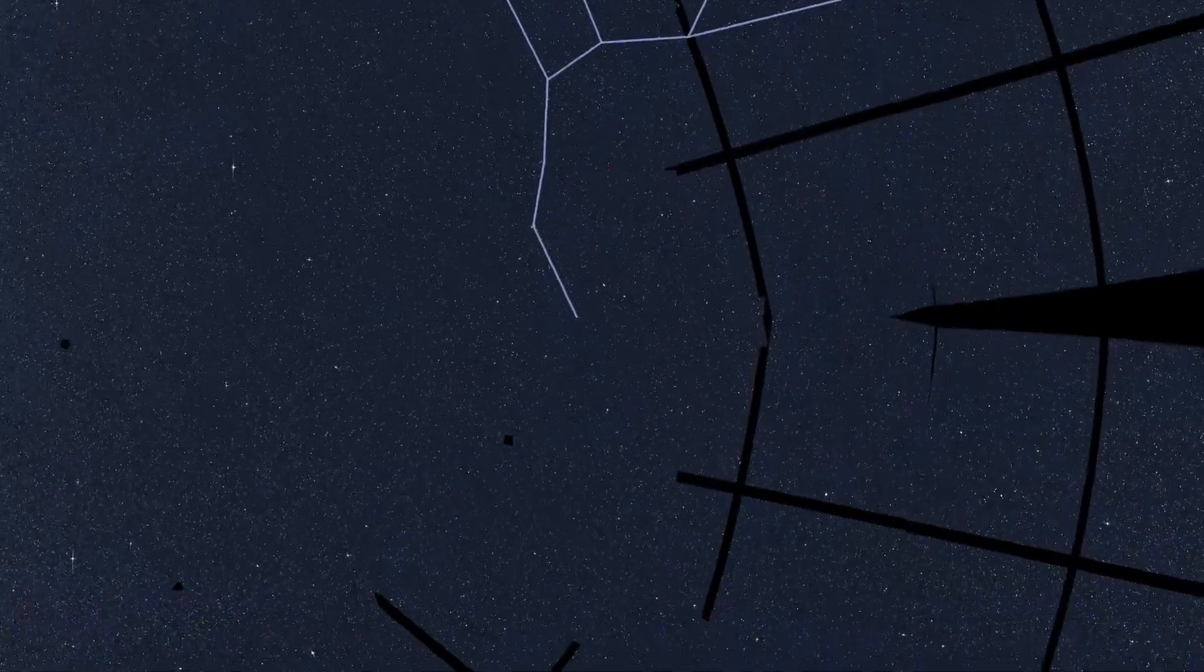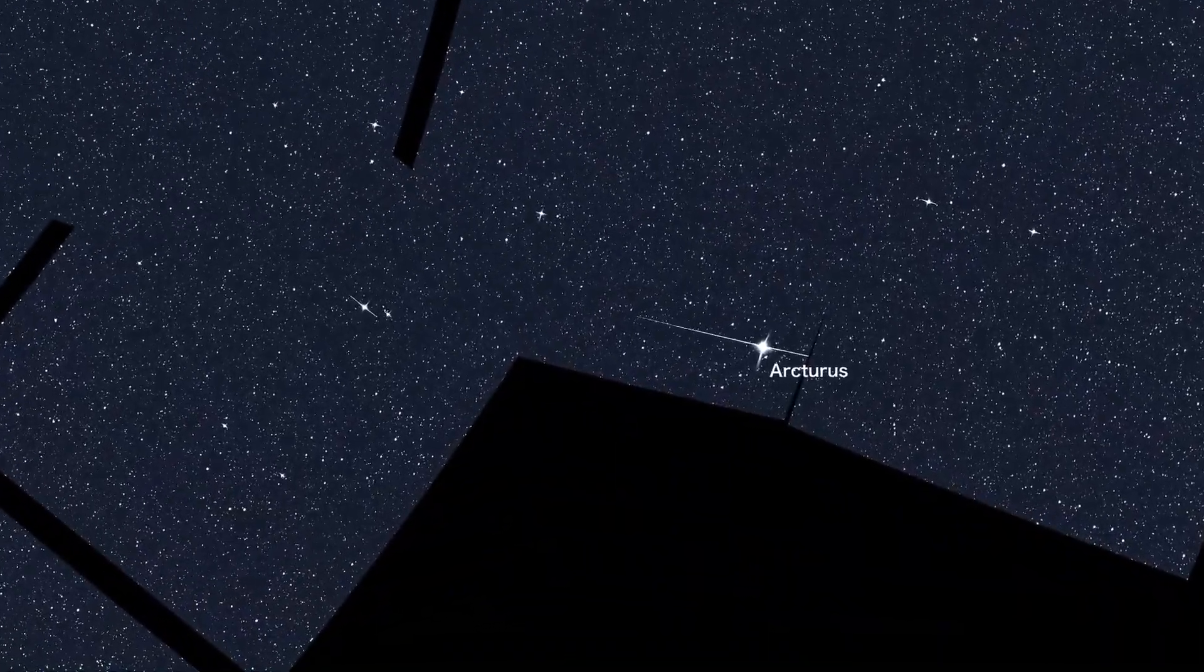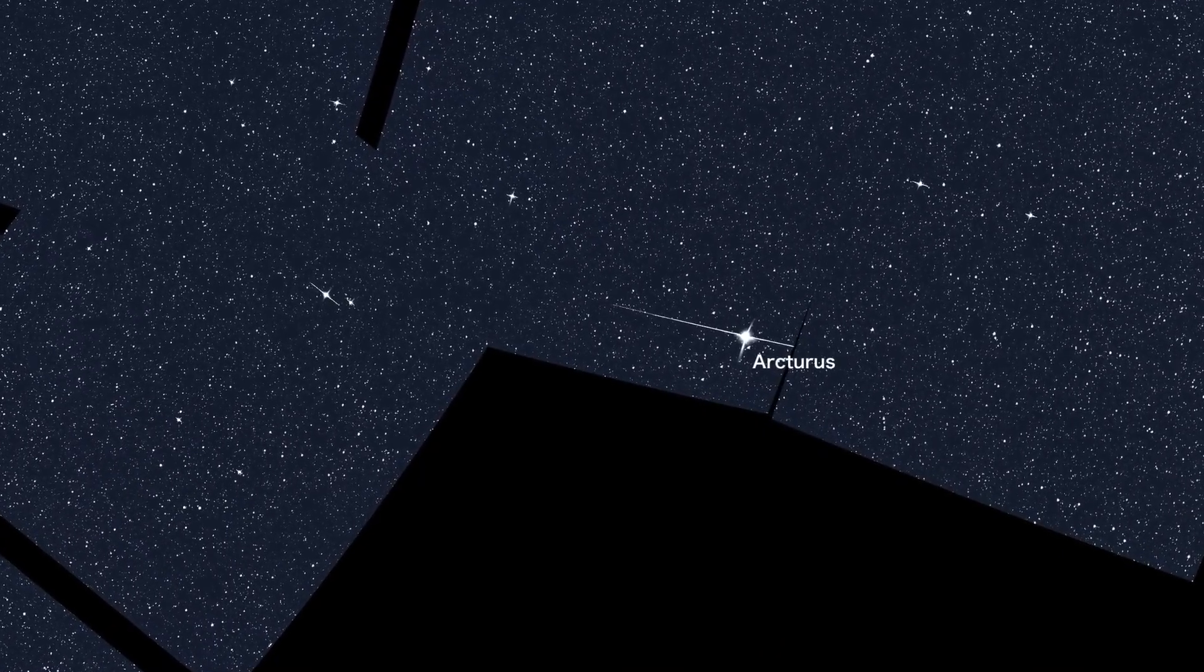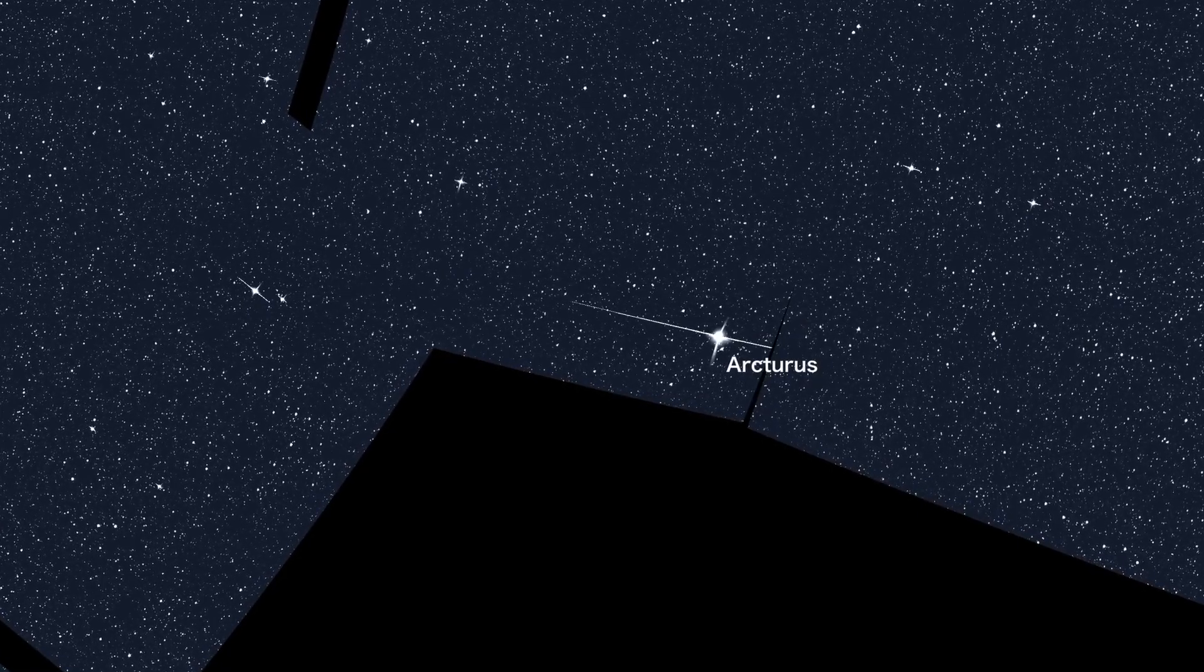Following the arc of the Big Dipper's handle leads to another prominent star, Arcturus. Located about 37 light-years away in the constellation Boötes, Arcturus is the fourth brightest star in the night sky.